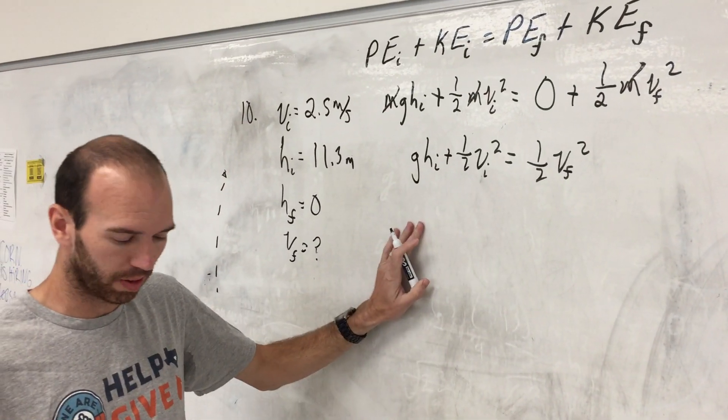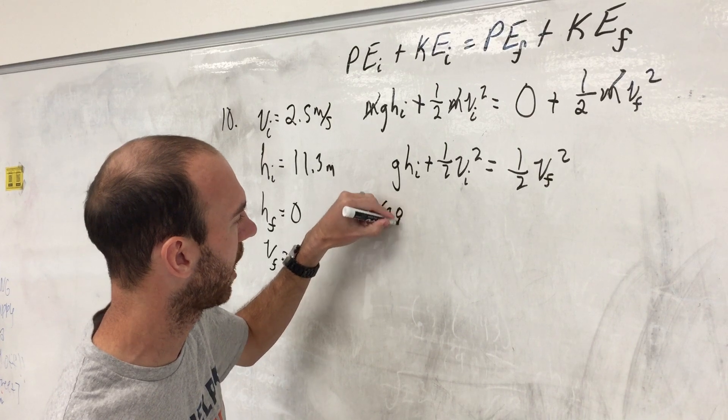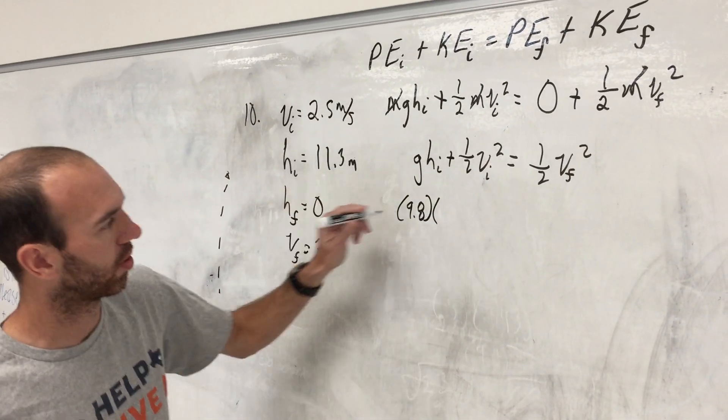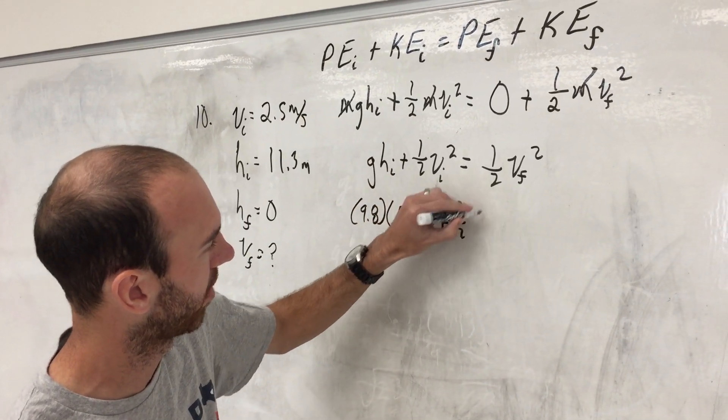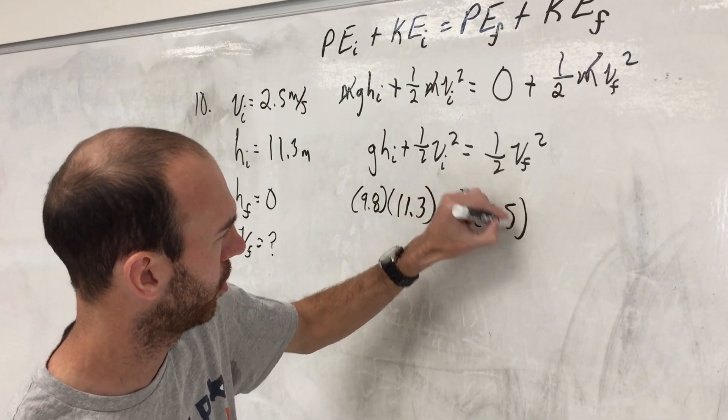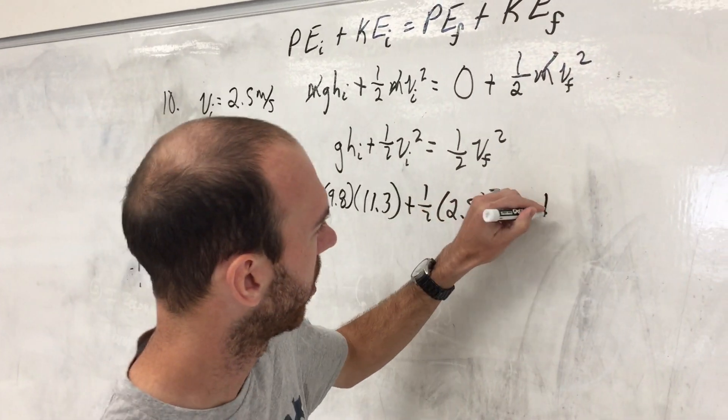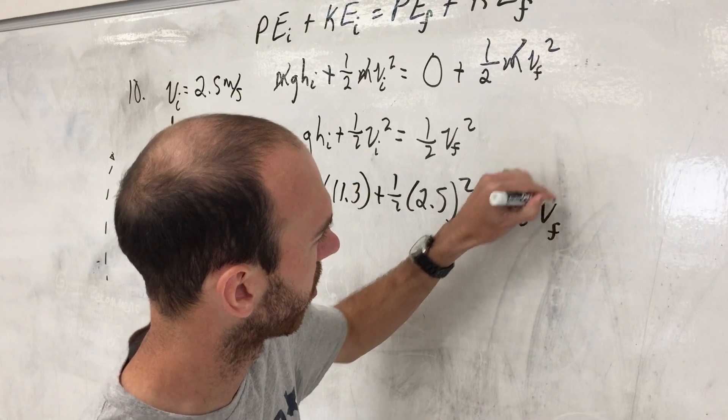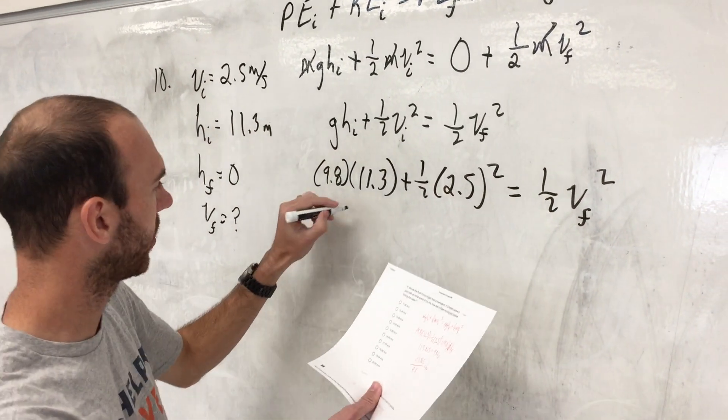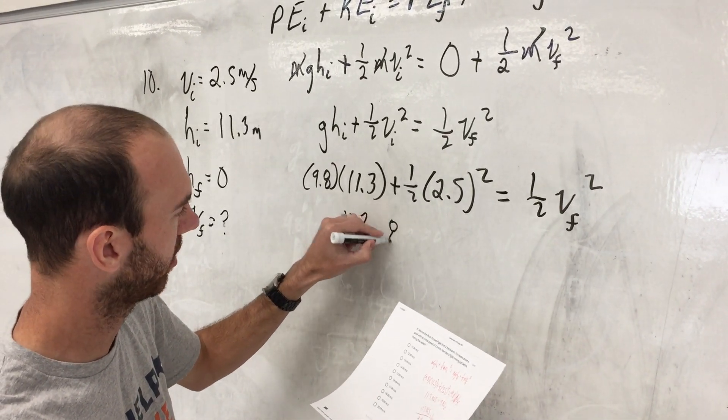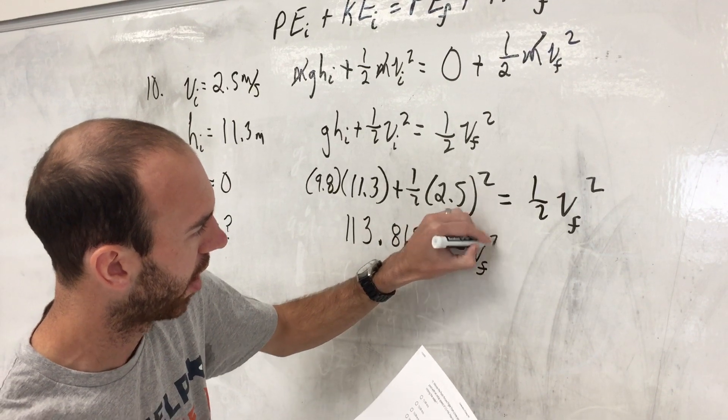At this point we probably want to plug in our values. So the acceleration of gravity is 9.8 meters per second squared on earth. Our initial height of Piglet is 11.3 plus one half times that initial speed that Pooh gives, and then one half the thing we're looking for squared. If we plug all that into our calculator we should get 113.865 equaling one half v final squared.